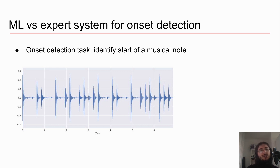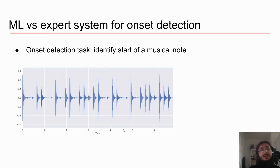Looking at this waveform, on the x-axis you have time, and on the y-axis you have amplitude or loudness. When you have a burst of energy — a peak — it means there's an onset, a musical note. Let's take a look at how we would solve this problem with machine learning versus an expert system.